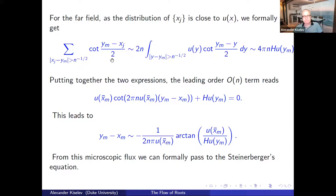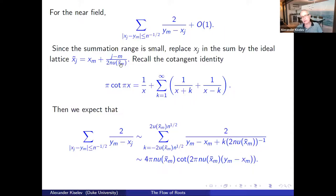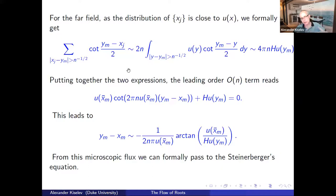For the far field, the sum is approximated by an integral, which is precisely the Hilbert transform of the density. The roots are spaced according to the density, so density appears in this integral — the distance between roots is roughly 1 over 2n times the density. Putting these together, ignoring several errors in the formal argument, we get a balance equation that gives the microscopic flux of the roots. This microscopic flux exactly corresponds to the Steinerberger equation.